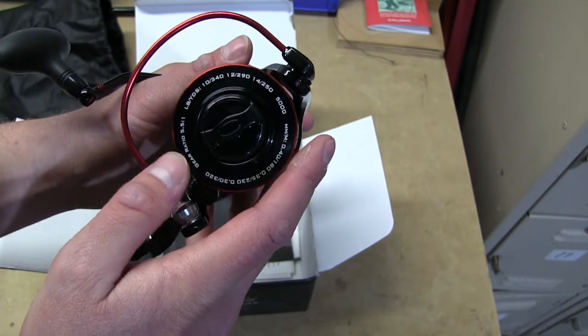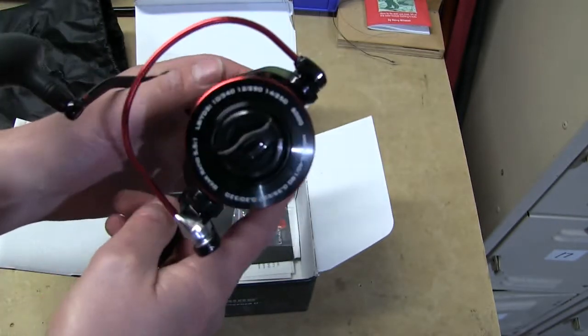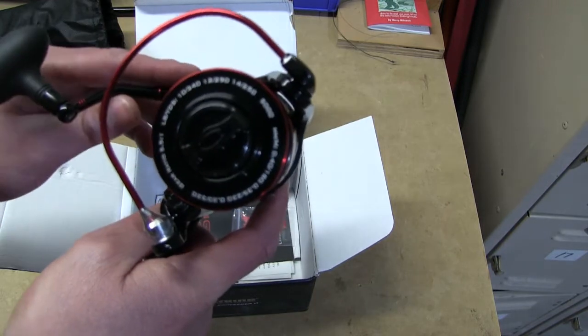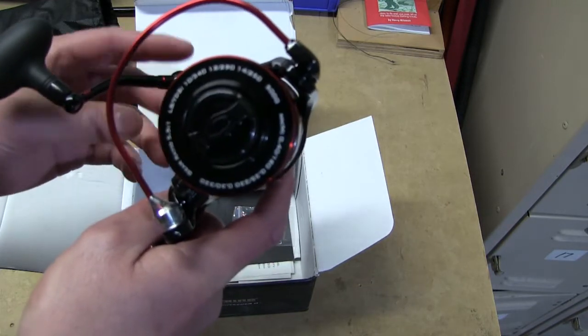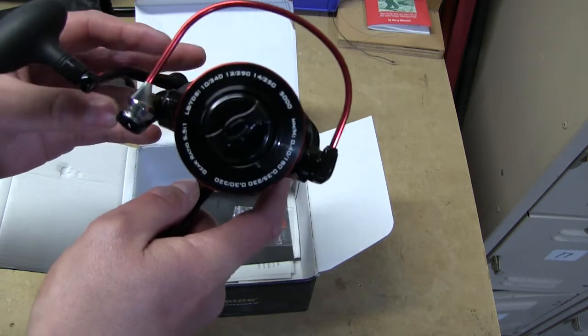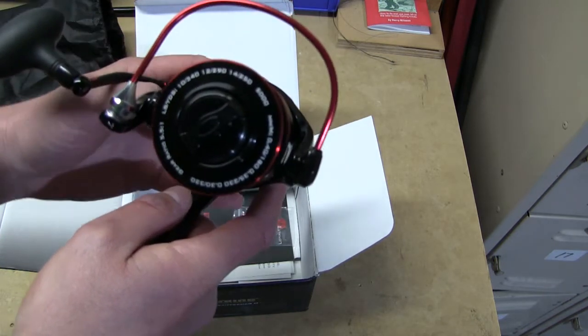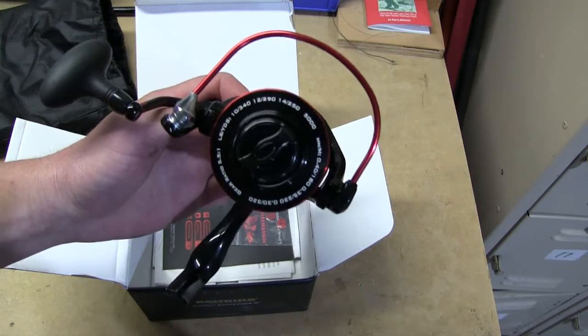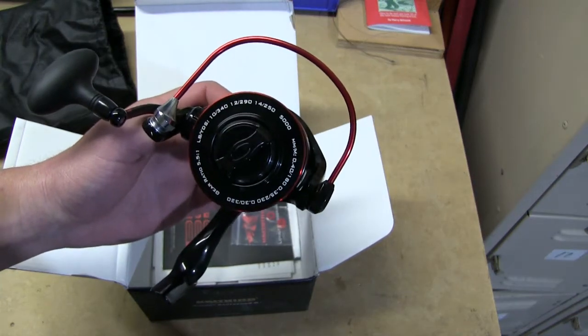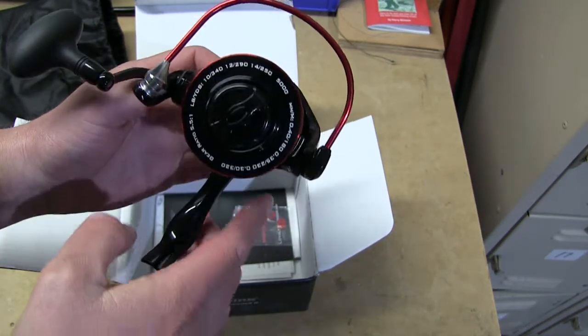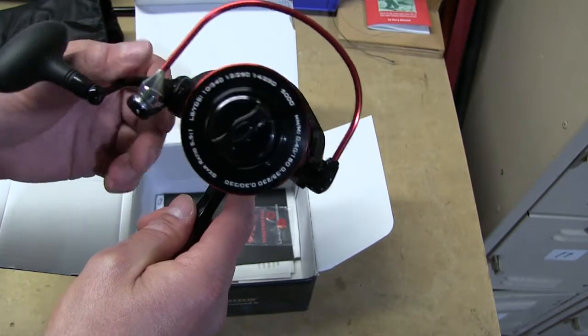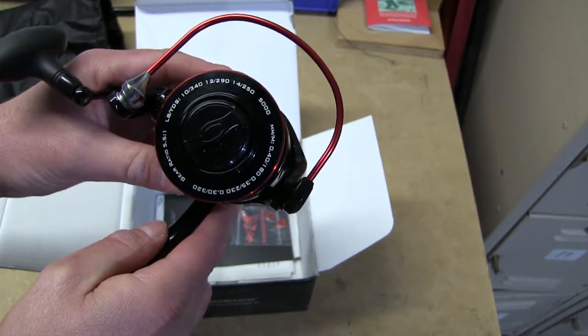I'll be putting either 12 or 20-pound braid on, so I can probably get a lot more on there. I probably will use a mono backing, but I can get a lot more braid because the diameter of it is much smaller than thin mono is.